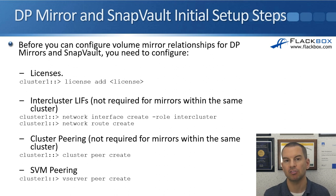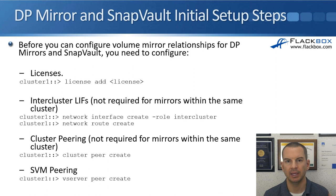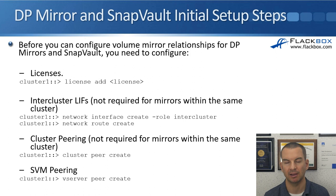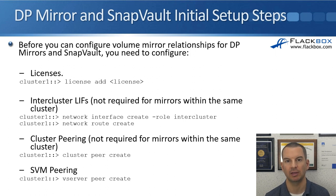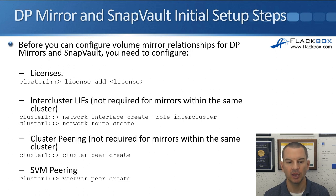For the replication traffic going between the clusters, it cannot use your normal LIFs that are being used for your client data access. You need to use dedicated inter-cluster LIFs for this. The command to create the logical interfaces is exactly the same as if you were doing normal LIFs for client data access. The difference is that you need to specify role inter-cluster.